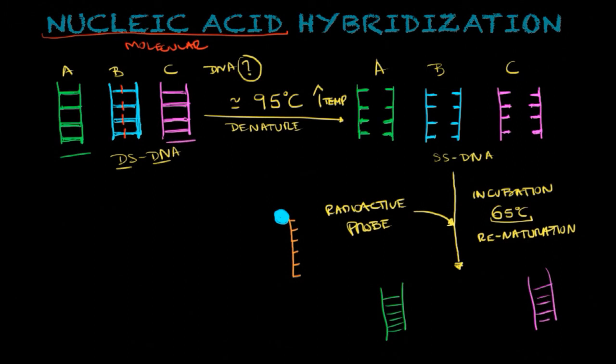But surprisingly, and this is what you want to do, is to find a sequence that matches this sequence right here. And it's going to be B. So what you're going to see is that one of the single-stranded DNA strands is going to bind to this radioactive probe because it has the complementary sequence.